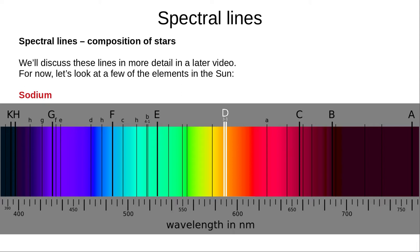The so-called sodium doublet, responsible for the yellow-orange colour of many streetlights, shows that sodium is also present. About 0.2% of the Sun is iron, and we can also see evidence of magnesium and calcium.